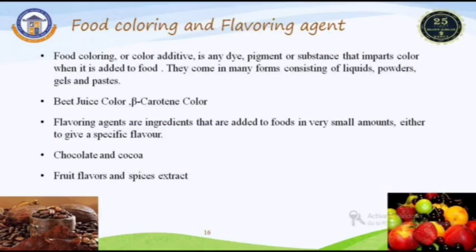Other minor ingredients are food coloring and flavoring agents. Food coloring agents, also called food additives, are dyes or pigments that give a specific color to the final product. They come in many forms: liquid, powder, gel, and paste. Examples include beta-carotene, a natural pigment from plants. Flavoring agents are ingredients that give specific flavoring characteristics to a final product. Best examples are chocolate, cocoa, fruit flavors, and spice extracts.